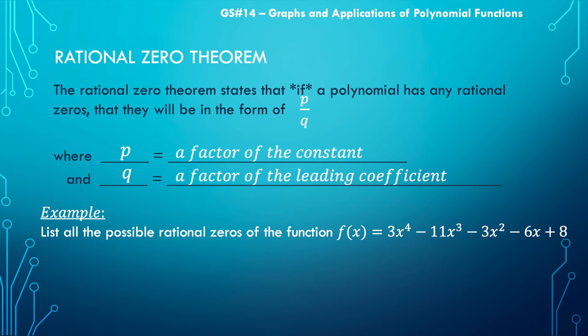And that's all it really says. So it doesn't guarantee there's a zero, it doesn't guarantee there's a rational zero, but if there is one, it will be in this form. So let's look at an example.